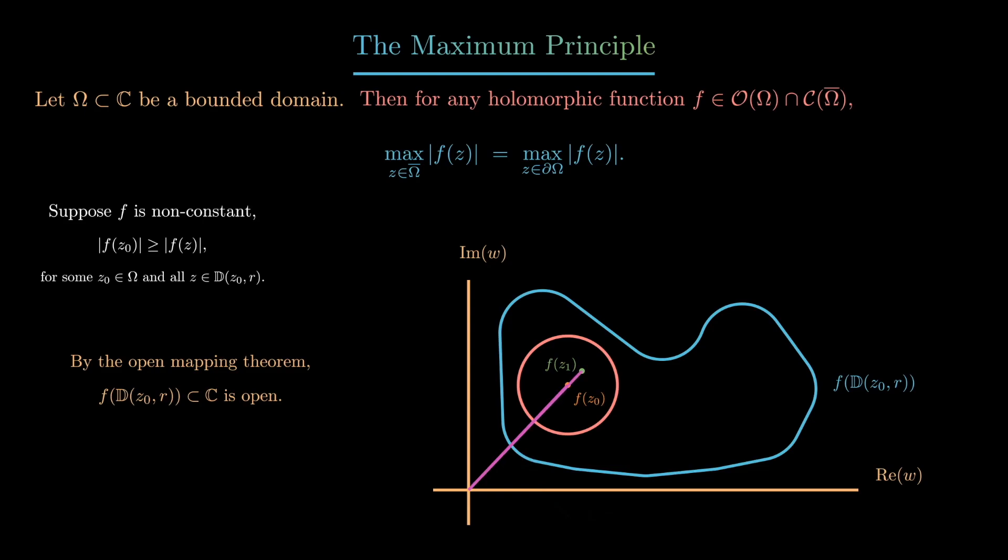The length of this line clearly exceeds the length of the line from the origin to f(z₀), and in particular, that tells us the absolute value of f(z₁) is strictly greater than the absolute value of f(z₀).